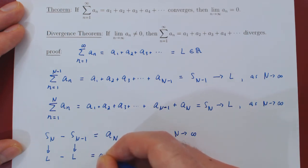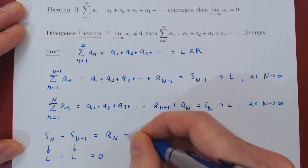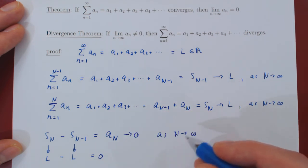So the difference will converge to L minus L, which is simply 0. But both are equal. So if this side of the equality converges to 0 as N tends to infinity, then this side must also converge to 0 as N tends to infinity.